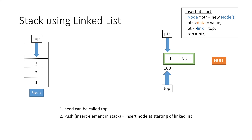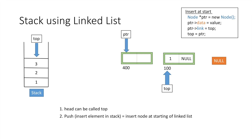Now let's push the element 2 in our stack. We repeat the process and create a new node — let's say it is created at address 400 in memory — and we return this address to our pointer ptr, which means ptr is now pointing to this node. Next we insert the value 2 in the data part of the node.